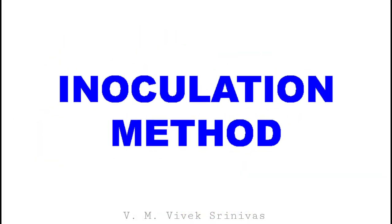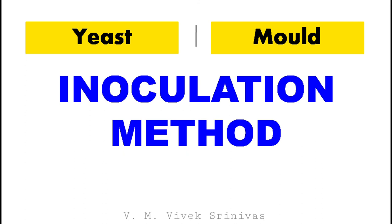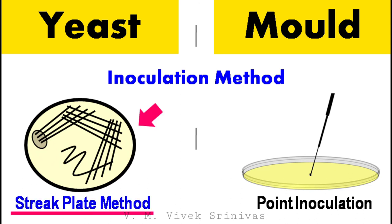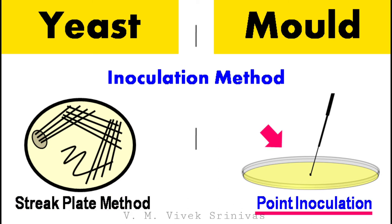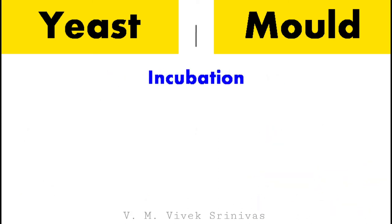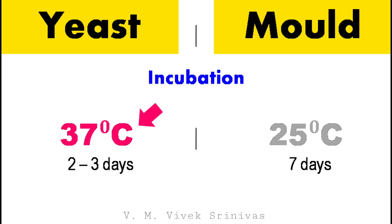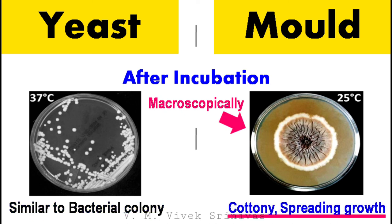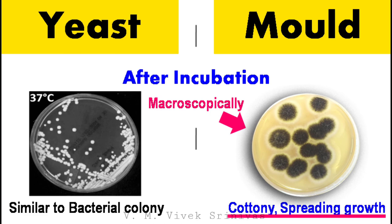How are fungi inoculated onto culture media? For yeast and mold, separate inoculation methods are followed. For yeast, the streak plate technique is done like bacterial isolation. But for mold, point inoculation is done. After inoculation, yeast are incubated at 37°C for 2 to 3 days, while molds are incubated at 25°C for 7 days. After incubation, macroscopically yeast appears similar to bacterial colonies — smooth surface colonies — but molds appear as cottony spreading type of growth.